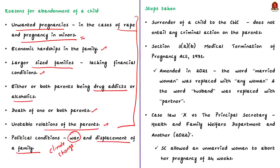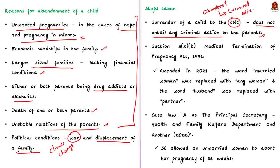First, the government is encouraging surrendering the child instead of abandoning the child. The surrender of a child to the child welfare committee does not entail any criminal offense on the parents. But if a child is abandoned by a parent or guardian, criminal offense can be initiated against them. This encourages parents to surrender the child instead of abandoning the child. The government is also increasing awareness measures.